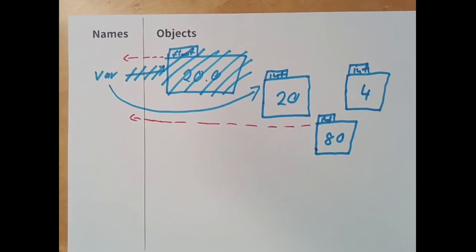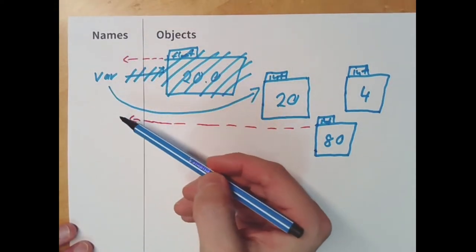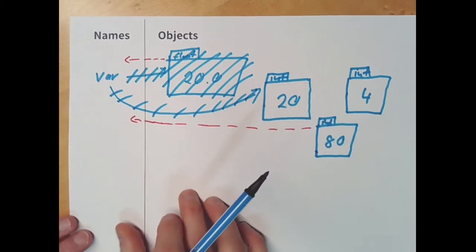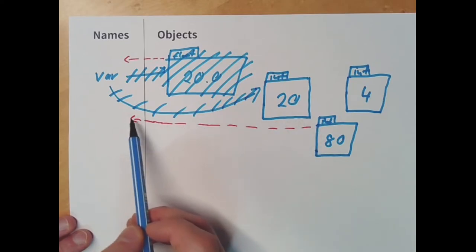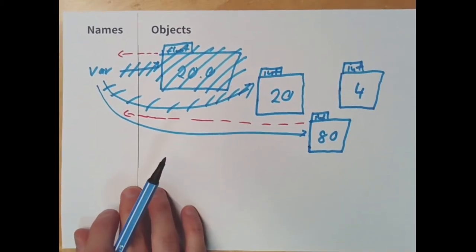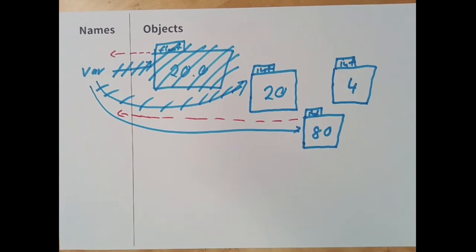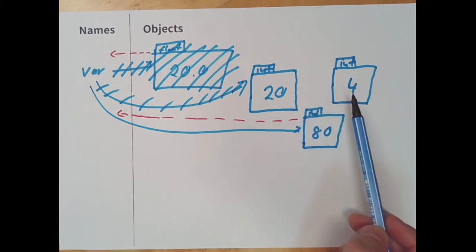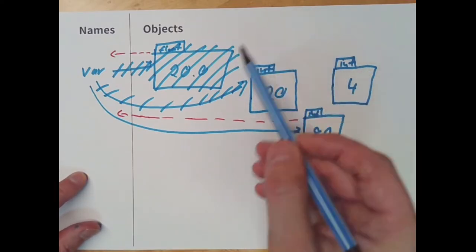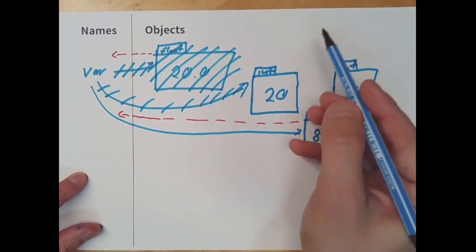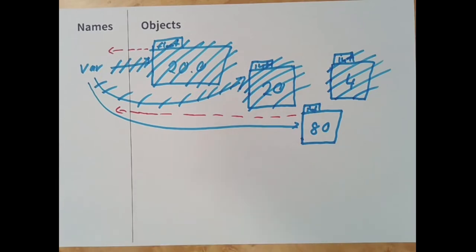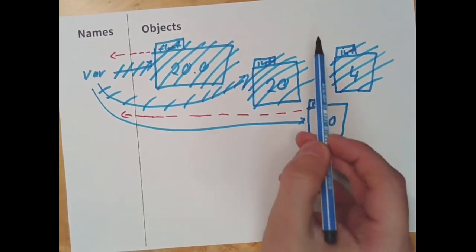Now we have two objects — the 20 and the 4 — that have no reference going to them. At some regular interval in the future, the Python garbage collector will find them, identify them as having a reference count of zero, and simply remove them from memory. Python will then reuse that area in memory for other objects.